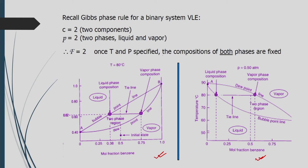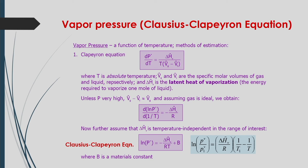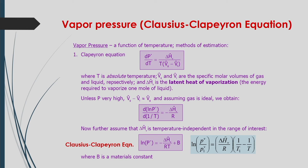Unless pressure is very high, the difference in specific molar volumes of gas and liquid reduces to just the molar volume of the gas. Assuming ideal gas behavior, and further assuming the enthalpy change is temperature-independent over the range of interest, the Clapeyron equation is modified to give the Clausius-Clapeyron equation, which includes a material constant B. Knowing vapor pressure at one temperature allows you to calculate it at another temperature using this equation.